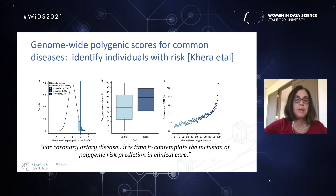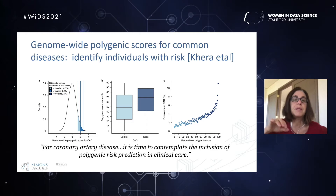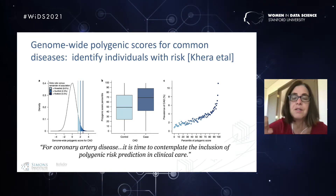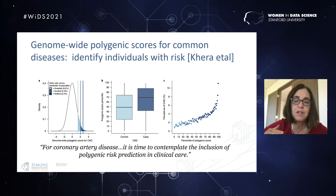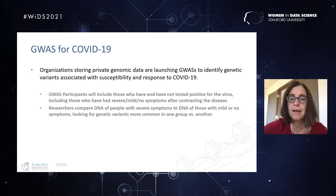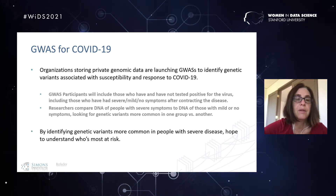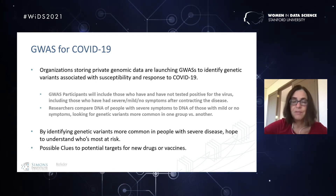Beyond GWAS, people are now doing polygenic scores: take a particular individual, go through their entire genome, and figure out, given their specific genetic variations at different positions, what is their risk for a particular disease. Rather than looking at a population and correlating disease with genetic variation, you look at an individual's specific variations and compute a score. This has taken center stage in genomic studies and has had an impact for COVID-19, where organizations storing private genomic information are computing scores for the likelihood of severe disease or even initial infection.